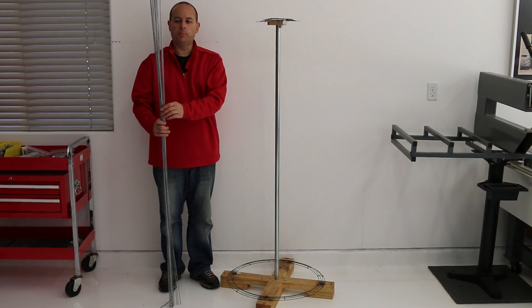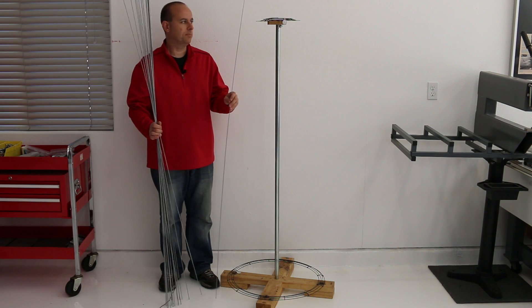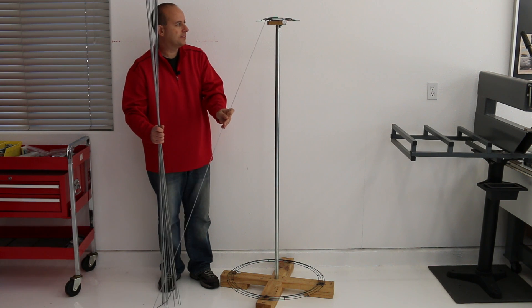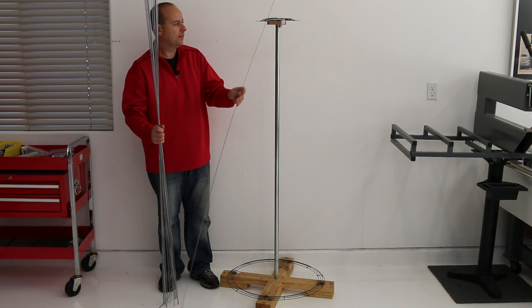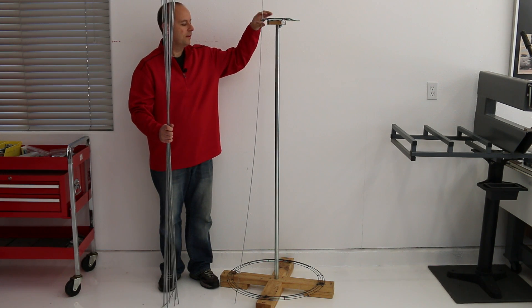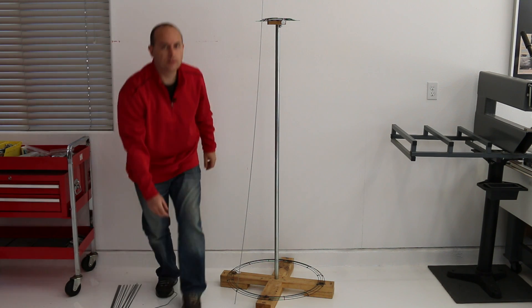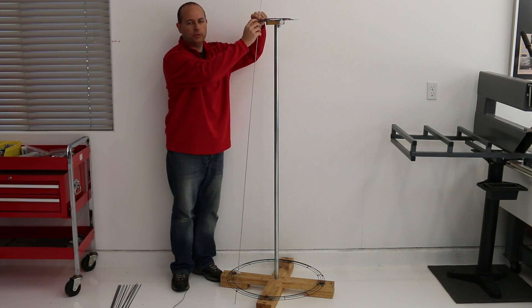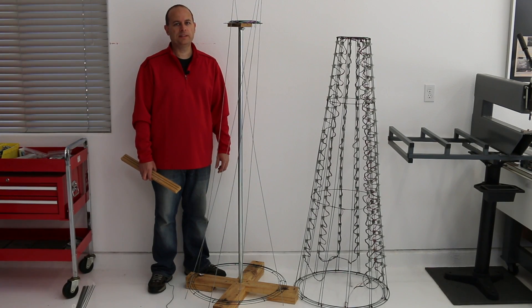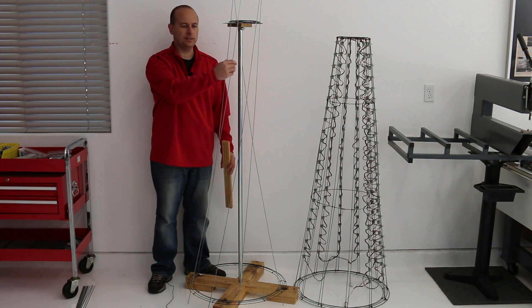So the next step is putting in each of the rods that make up the vertical components that hold the pixels in place on the tree. To do that, I take each rod, I slide it through the top ring and through the bottom ring. For the purpose of demonstration, I've added a few more of these vertical rods just to give you an idea of the process that I go through.